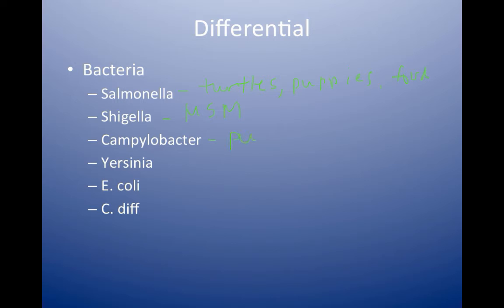Campylobacter, the classic association you'll see on the board, is with puppies again. It can also be seen in MSM and in travel. Yersinia is not very common in the United States, but it can be associated with food.